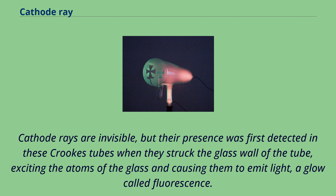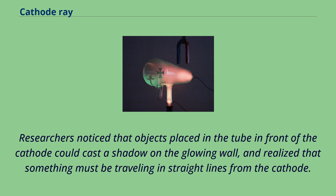Cathode rays are invisible, but their presence was first detected in these Crookes tubes when they struck the glass wall of the tube, exciting the atoms of the glass and causing them to emit light, a glow called fluorescence. Researchers noticed that objects placed in the tube in front of the cathode could cast a shadow on the glowing wall, and realized that something must be traveling in straight lines from the cathode.